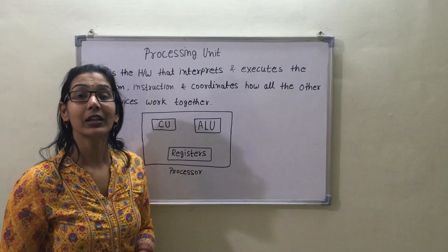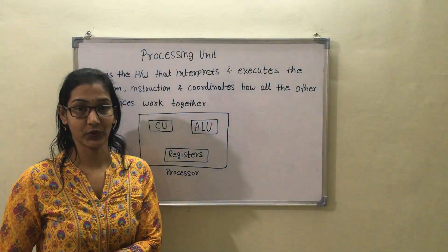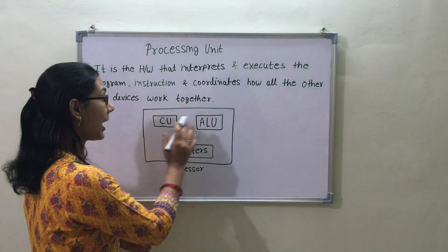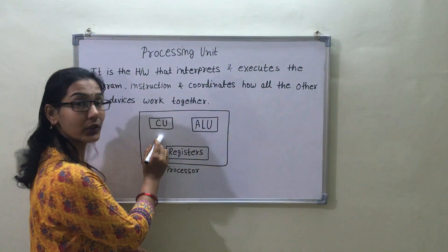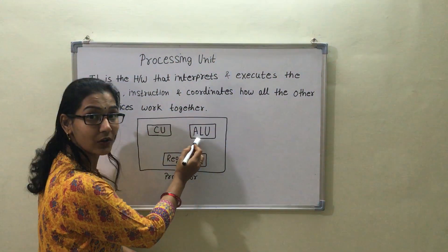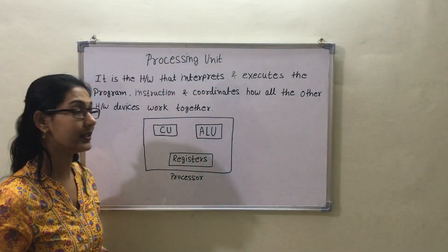CPU has three units: control unit, arithmetic logical unit, and registers.